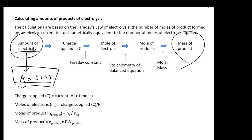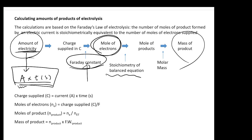Then you want to convert this charge into number of moles of electrons. You divide the charge by the Faraday constant to get the number of moles of electrons. Based on the balanced equation, you can see how many electrons are needed to form the product — this gives you a conversion factor so you know how many moles of product will be produced. Once you figure that out, just multiply by the molecular mass or formula weight of your product to get the answer.